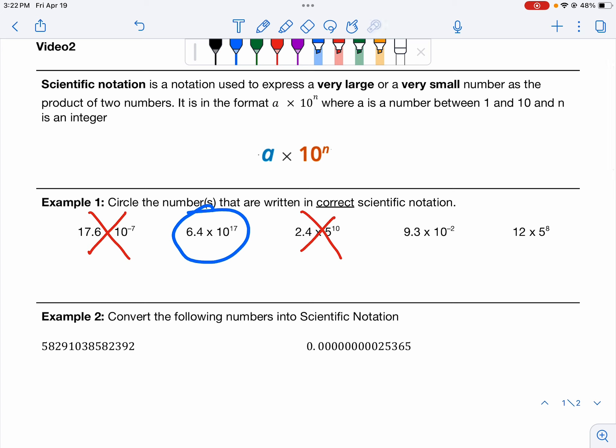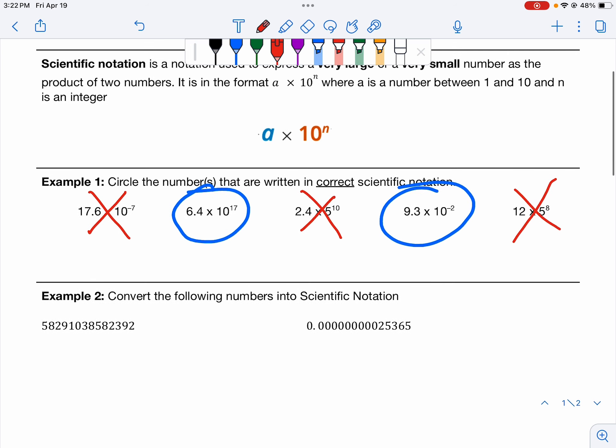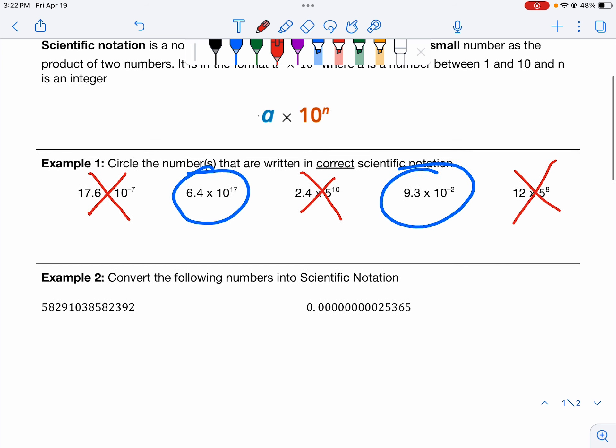All right, the next one. Let's look at our three numbers here. Are they in the right spots? 9.3, perfect, between 1 and 10. 10, negative 2, is that an integer? Yes, it is. Circle it. It's in scientific notation. This last one fails. Why does it fail? The 5 and the 12. Both fail.